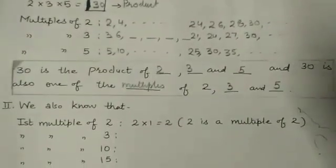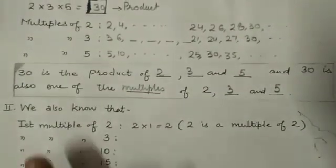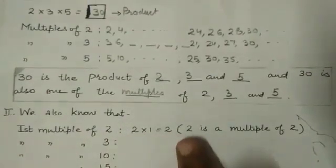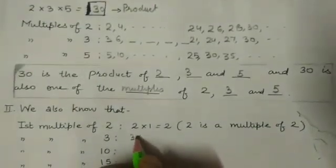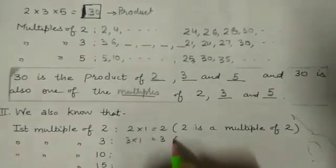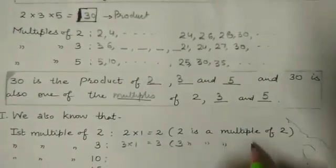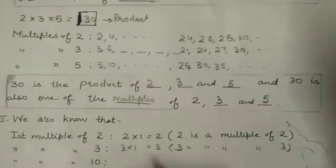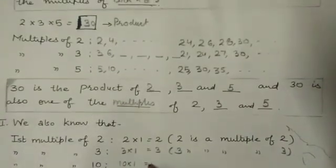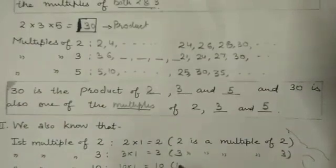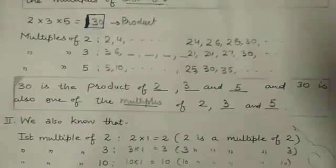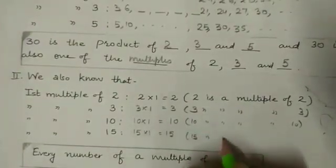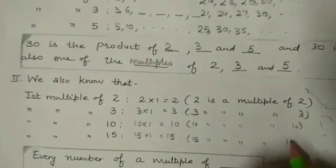Now we also know that first multiple of 2 is 2 ones are 2. That is 2 is a multiple of 2. Let us write first multiple of 3: 3 ones are 3. That is 3 is a multiple of 3. Now 10, if we multiply 10 into 1, 10 ones are 10. Again 10 is a multiple of 10. Then 15, same 15 ones are 15, and again 15 is a multiple of 15.